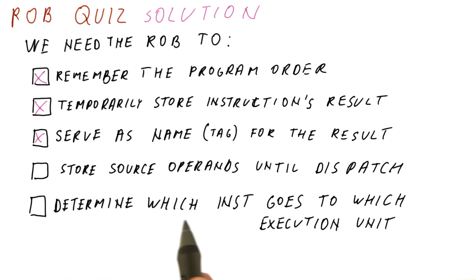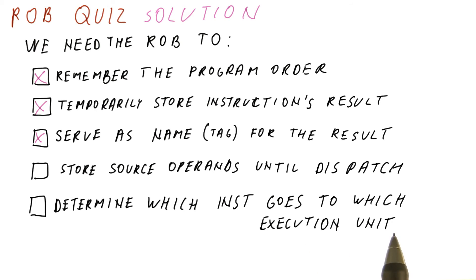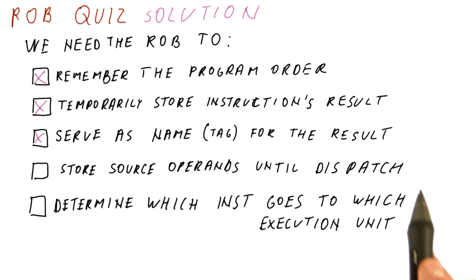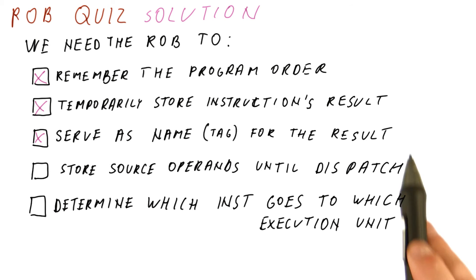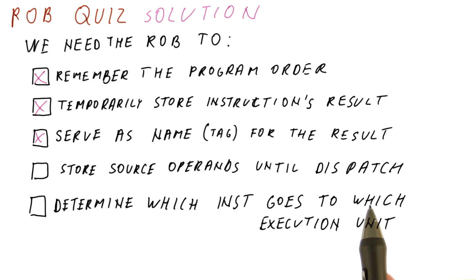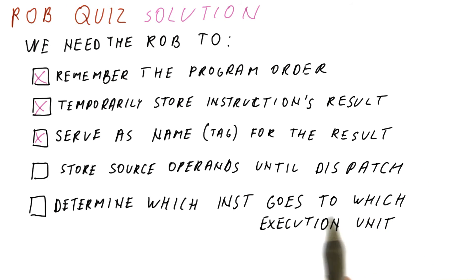And to determine which instruction goes to which execution unit — again, the ROB doesn't play this role. The ROB is usually unified, meaning all of the instructions go to the same ROB. They just get different entries in it.